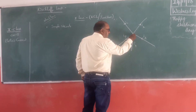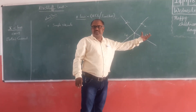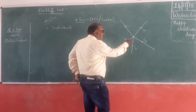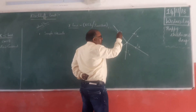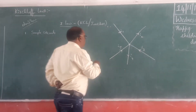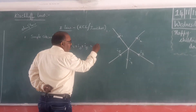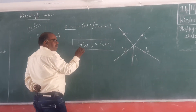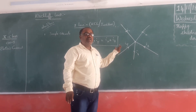Kirchhoff's First Law states: at any junction in a closed circuit — a closed circuit being one in which current flows — the sum of currents into the junction equals the sum of currents leaving the junction. Here, I1, I3, and I5 are coming towards the junction, so I1 + I3 + I5 equals the sum of currents leaving the junction. The magnitude of currents coming towards the junction is equal to the magnitude of currents leaving the junction. This is Kirchhoff's First Law.